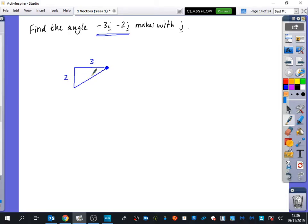This, then, is the vector that we are talking about right here. We want to find out what angle that this vector makes with J.